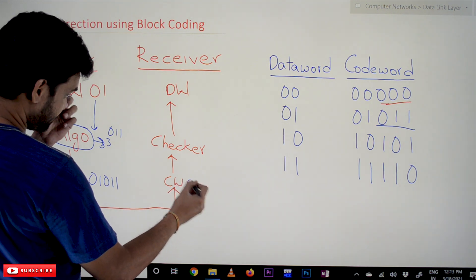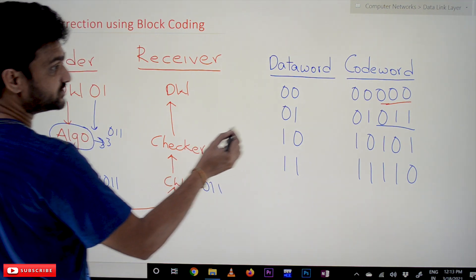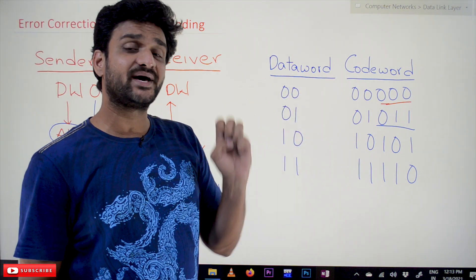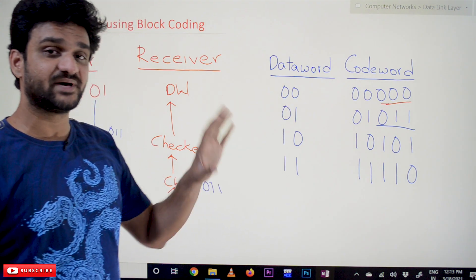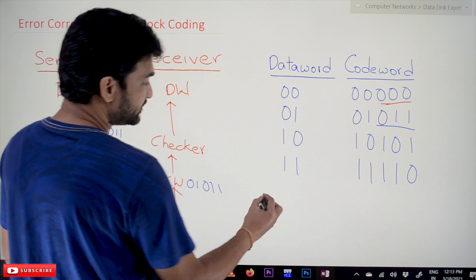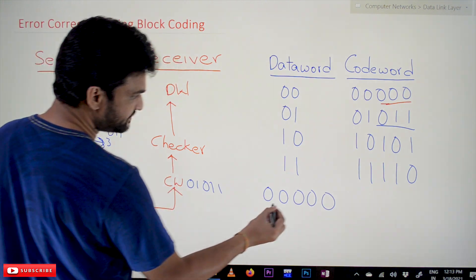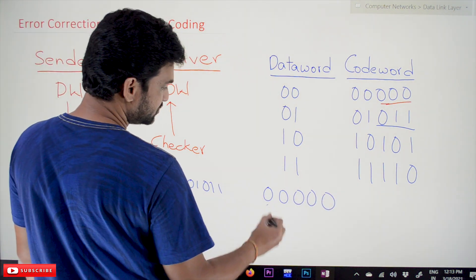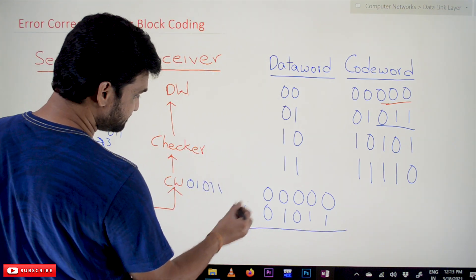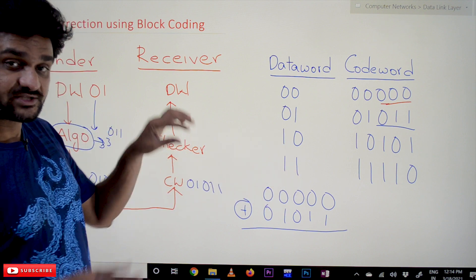Assume no errors have occurred during transmission. The checker is going to compare the received code word against all valid code words. The comparison is done using an XOR gate. For example, '01011' is first compared with '00000' — the five bits of both words are fed into the XOR gate. Then it is compared with '01011'.